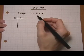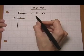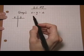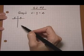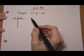Here we have a linear equation in two variables and we want to graph it. So the first thing we're going to do is find some ordered pairs to graph.